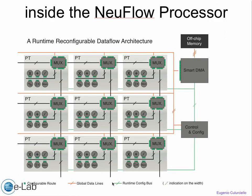This is the inside of the NeoFlow processor. You have a reconfigurable data flow architecture — a grid of processing tiles, each one connected through global data lines to a smart DMA memory access controller that controls how data flows from memory into the grid and back. The memory is DDR3, one of the fastest memories available. There is also a reconfigurable bus controlled by a 64-bit CPU that controls the entire grid to perform a selected operation.